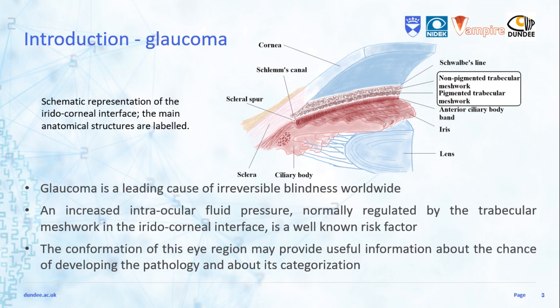The image shows the trabecular meshwork and other structures of interest in that region of the eye. The conformation of the interface can provide us with important information about the chances of developing this pathology, as well as about its categorization.